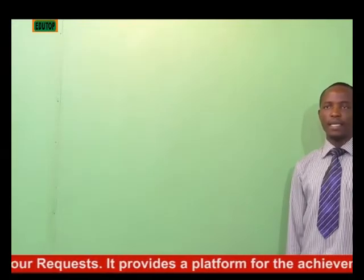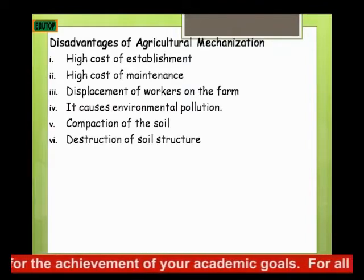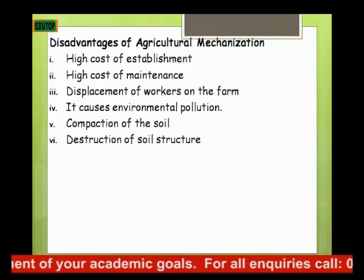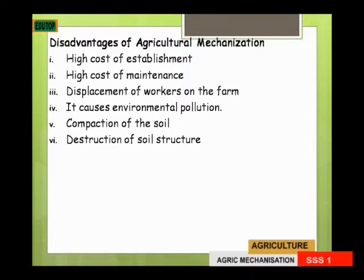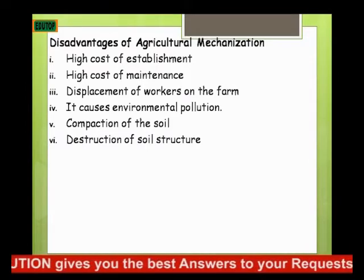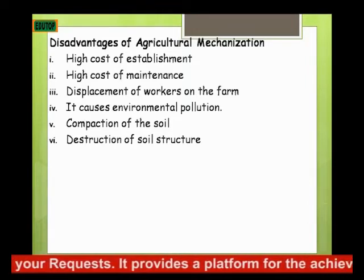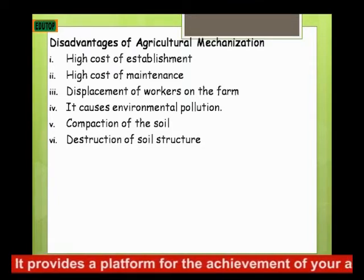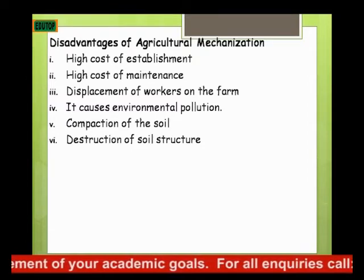The disadvantages of agricultural mechanization include: first, the high cost of establishment; second, high cost of maintenance; third, displacement of workers on the farm; fourth, environmental pollution through release of carbon monoxide from unburned fuel of tractors and prime movers; fifth, compaction of soil, since tractors are heavy and compact the soil as they move, leading to destruction of the soil structure.